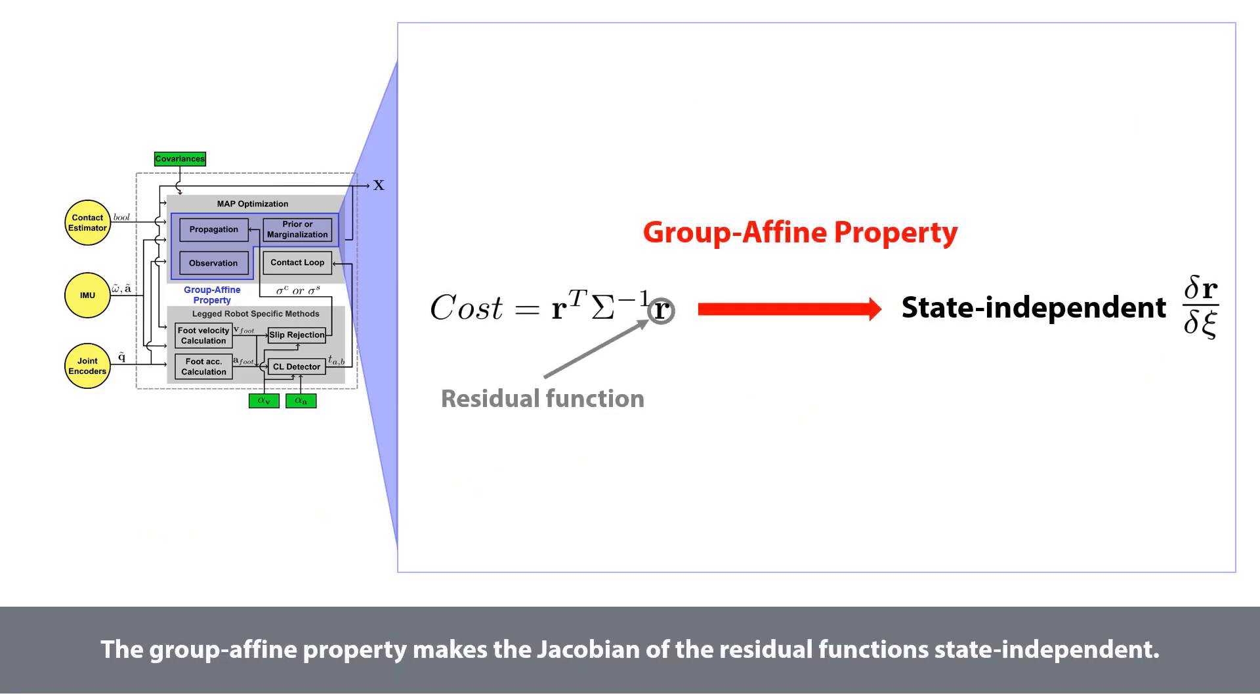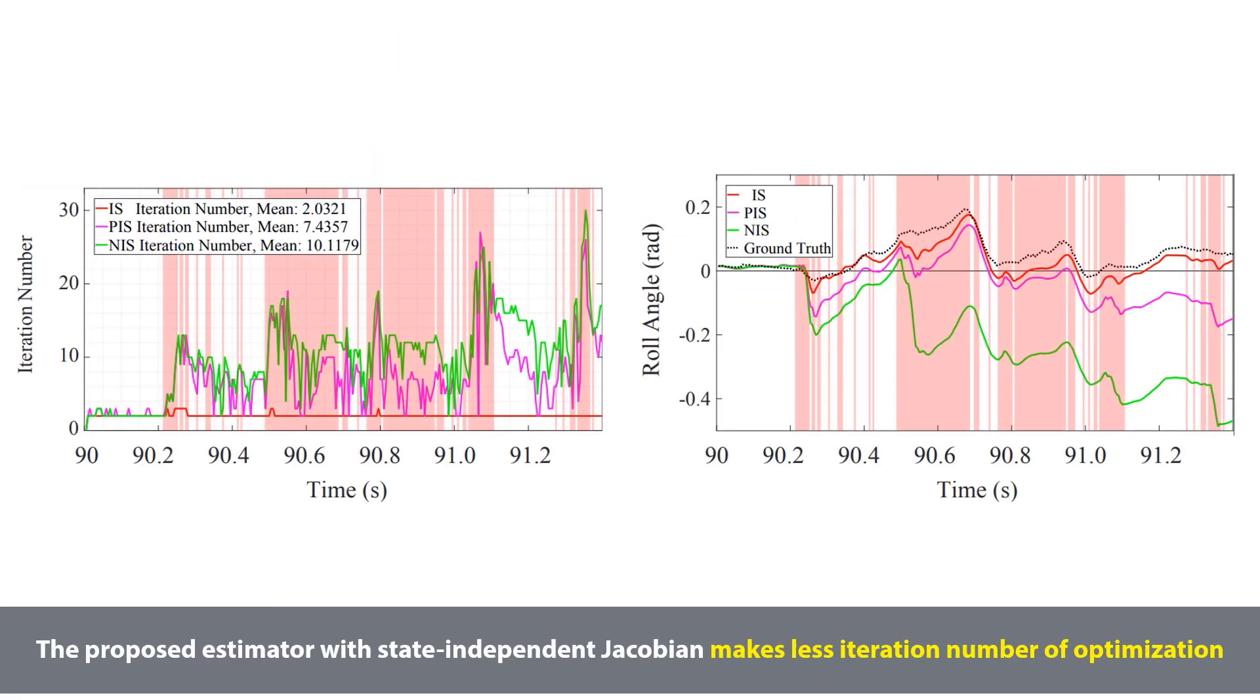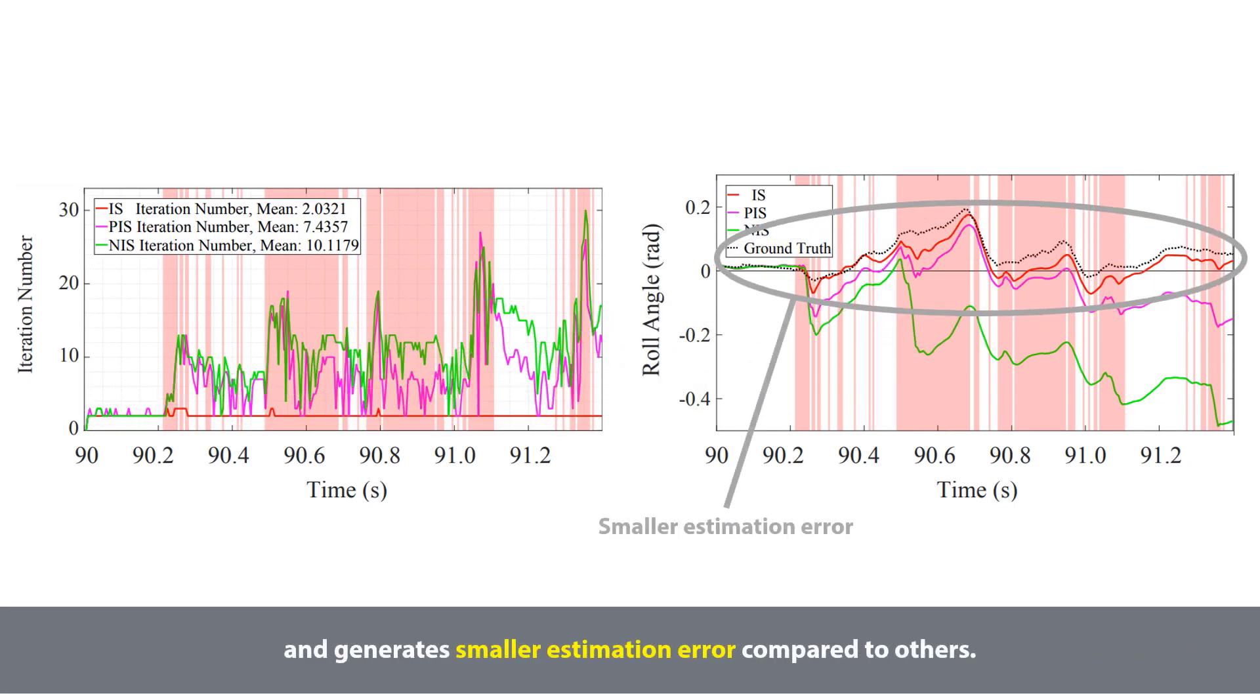The group affine property makes the Jacobian of the residual functions state independent. The proposed estimator with state independent Jacobian makes less iteration number of optimization, and generates smaller estimation error compared to others.